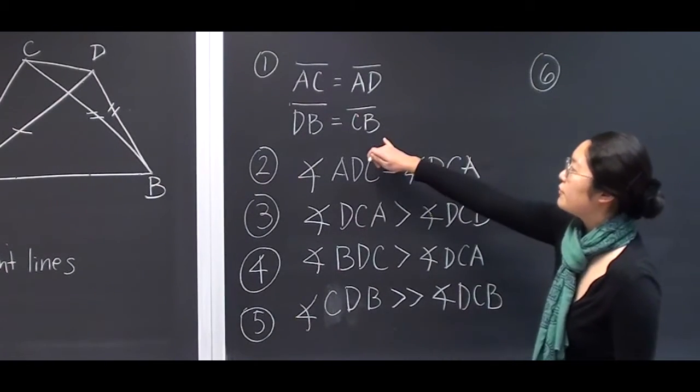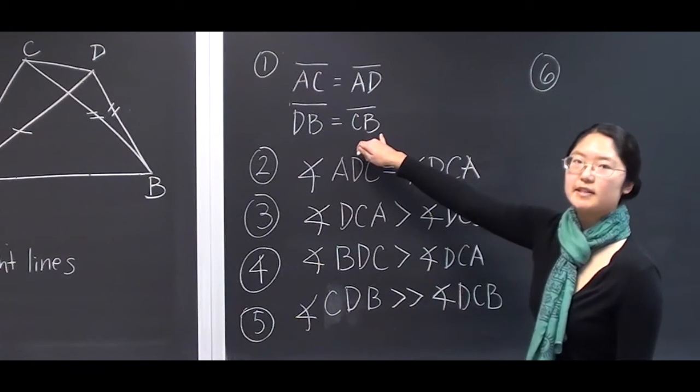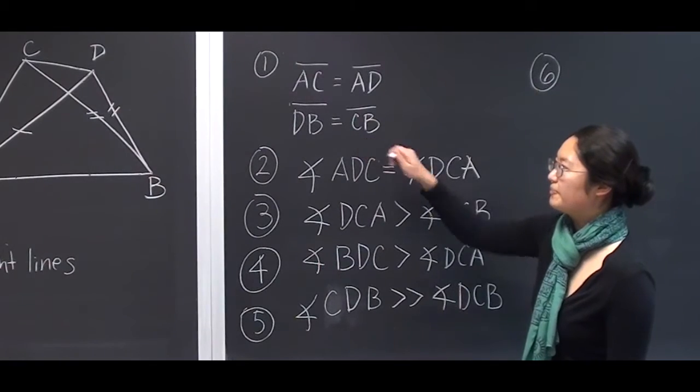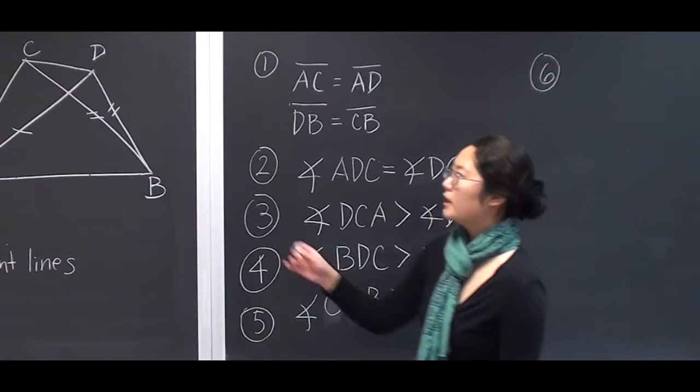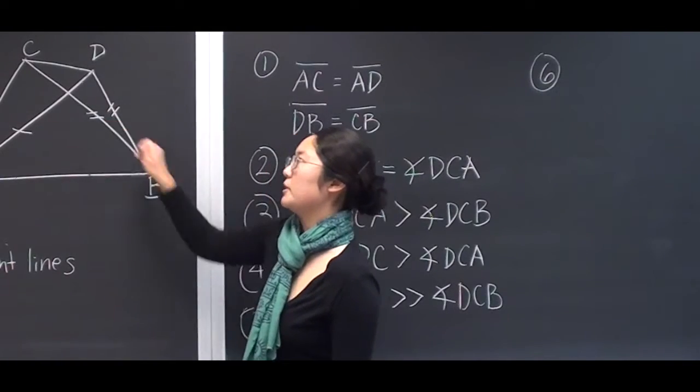However, if we look at the first step of our proof, line DB equals line CB. Therefore, the subtending angles of these two lines must also be equal.